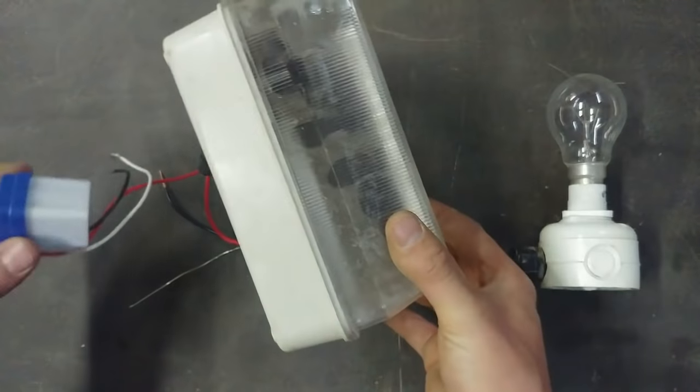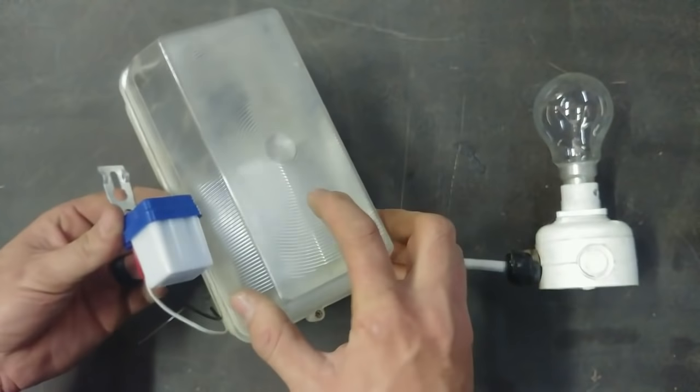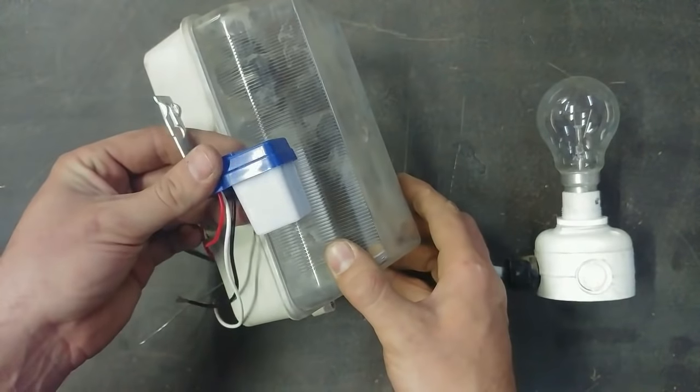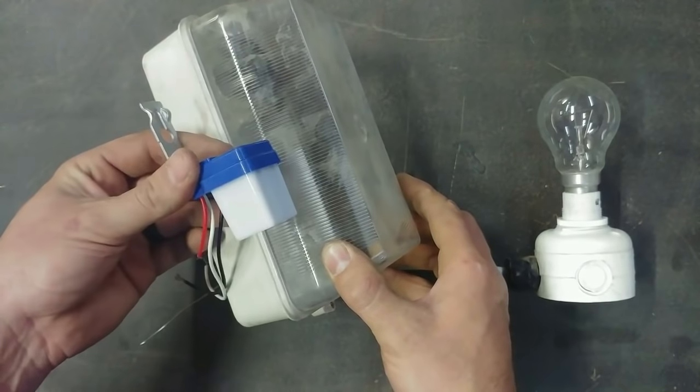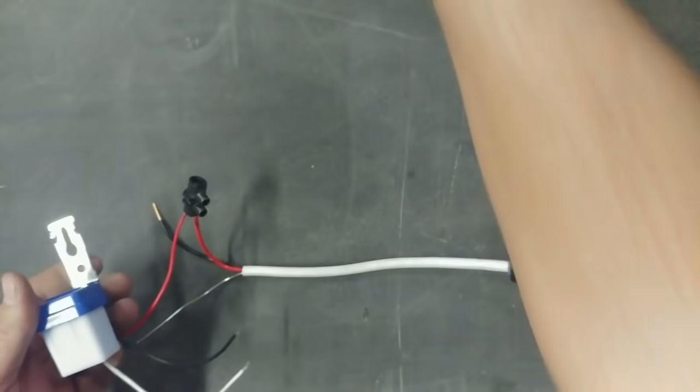Always remember to use junction boxes where there's open wires, always put them in boxes. I like to put the day-night switches inside a see-through box like this one. It protects it from the sun, the rain, and also protects the wires, the open wiring, so no one can touch it.